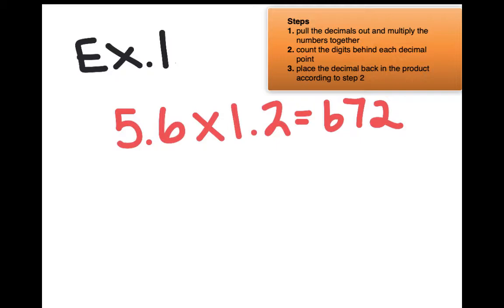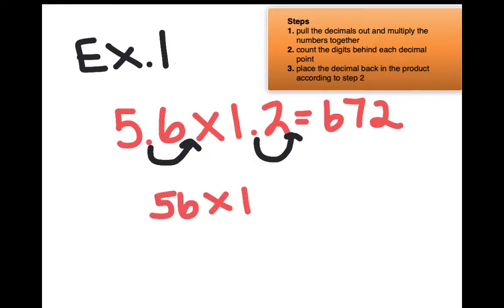All we need to do is place the decimal point in the product. If you were to just move this decimal one place and move this decimal one place, the problem would be — you don't have to write this down with me right now — it would be 56 times 12. And if you multiplied that out, you would get 672.